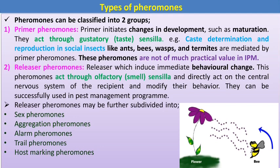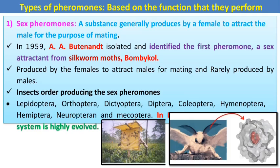Releaser pheromones can be successfully used in pest management programs and act through the olfactory sensilla. There are five types of releaser pheromones: sex pheromones, aggregation pheromones, alarm pheromones, trail marking pheromones, and host marking pheromones.